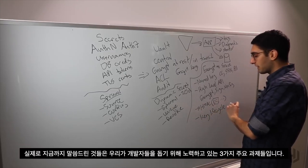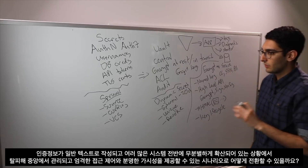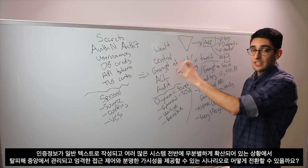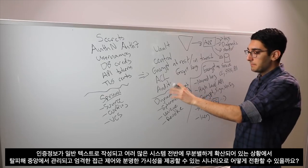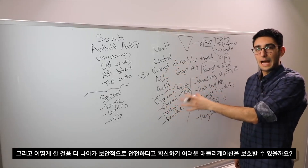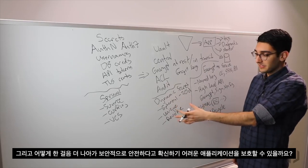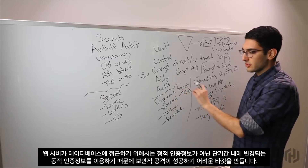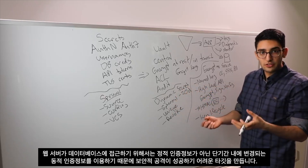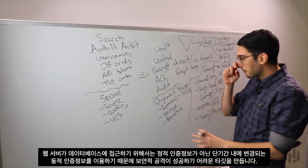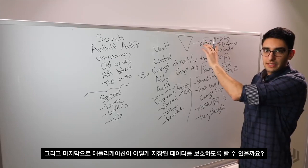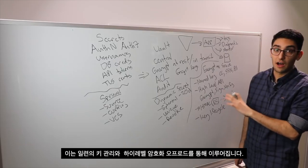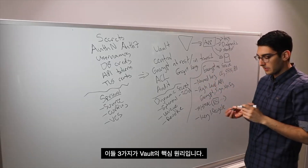In practice, these end up being the three major challenges we're trying to help developers with. How do we move credentials out of plain text sprawled across many systems into a scenario where they're centrally managed with tight access control and clear visibility? Then, how do we go further and protect against applications that aren't trusted to keep secrets, by using ephemeral dynamic credentials instead of static ones? And lastly, how do we help the application protect its own data at rest through key management and high-level cryptographic offload? These three are the core principles of Vault.